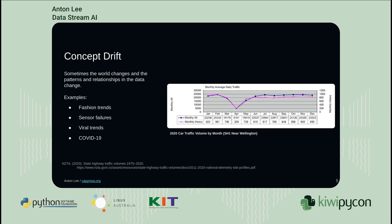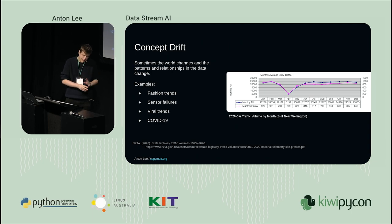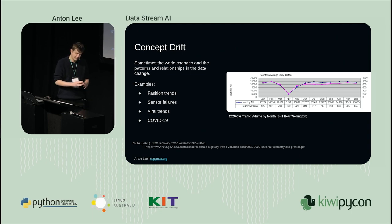Here's a lovely graph of the 2020 car traffic volume on State Highway 1 near Wellington. If you were looking at it in January, you'd probably predict February well. And then you'd be a bit confused in March and April. We have all this history of what car traffic's like in March and April, and it's not matching at all. This is why it's really important to be able to detect concept drift, and data stream learning gives you an ability to quickly adapt to changes in the world.